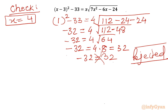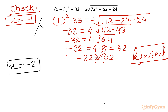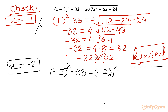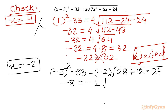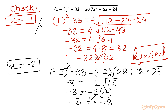Now let us check the second solution x equals minus 2. The left hand side gives (minus 2 minus 3) whole square minus 33 equals (minus 5) whole square minus 33 equals 25 minus 33 equals minus 8. The right hand side gives minus 2 times square root of (7 times 4 minus 6 times minus 2 minus 24) equals minus 2 times square root of (28 plus 12 minus 24) equals minus 2 times square root of 16 equals minus 2 times 4 equals minus 8. Since minus 8 equals minus 8, x equals minus 2 is verified. So only one real solution exists, which is x equals minus 2.